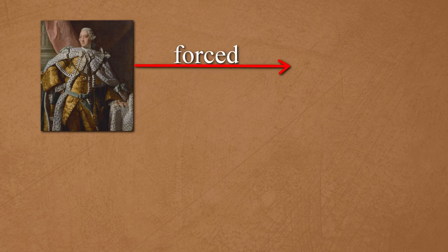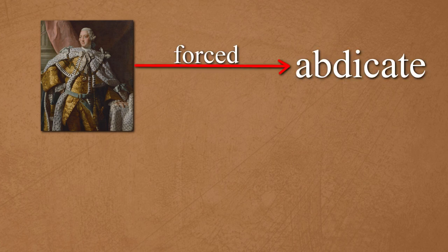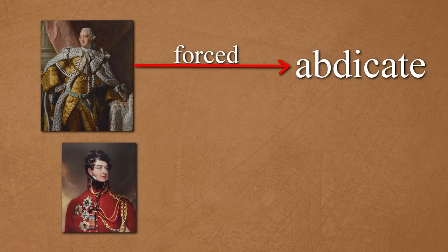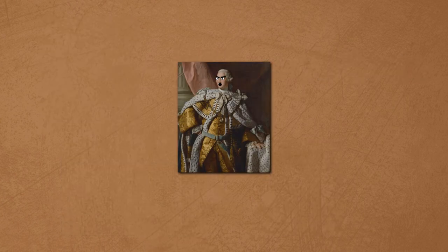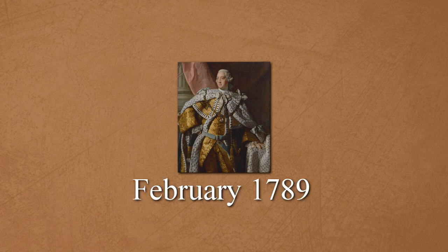Without going too much into depth about George III's madness, if the king was forced to abdicate, Prince George would become king and most likely remove Pitt from office, because the prince favoured Fox over Pitt. But luckily for Pitt, George III recovered in February 1789.